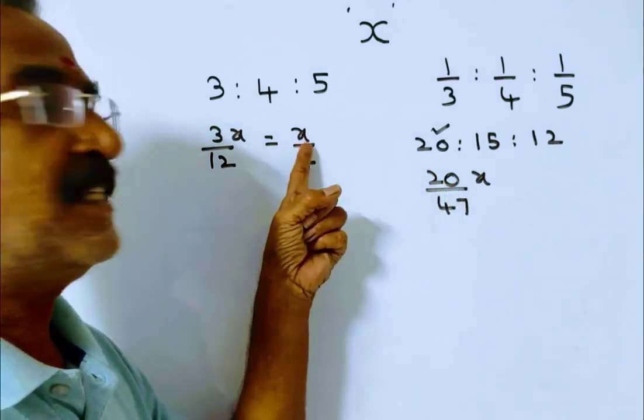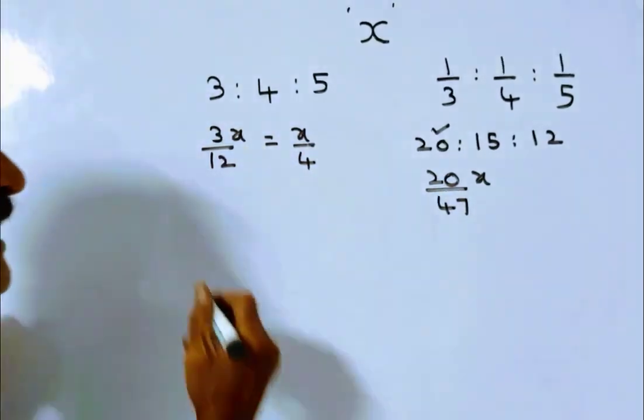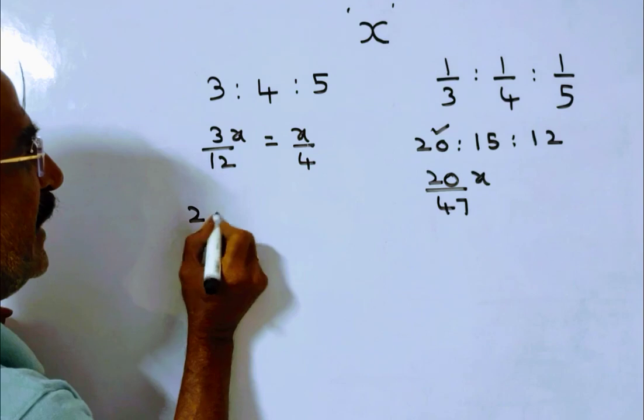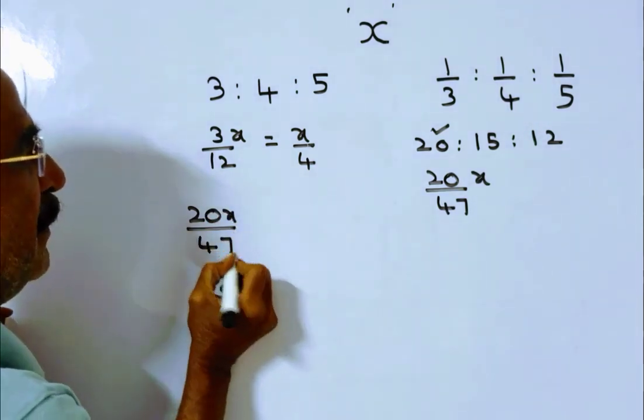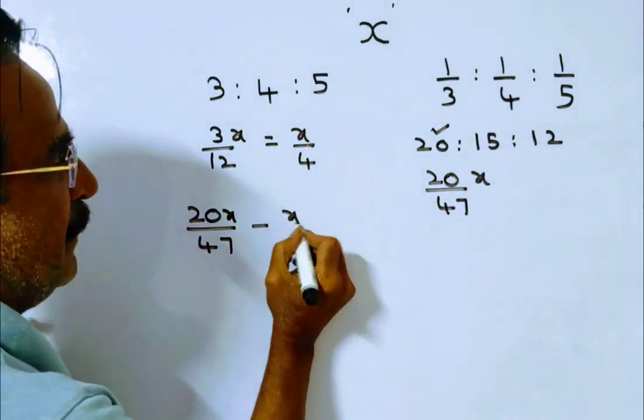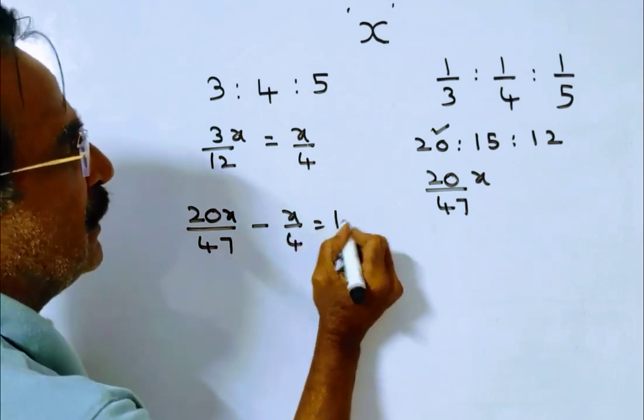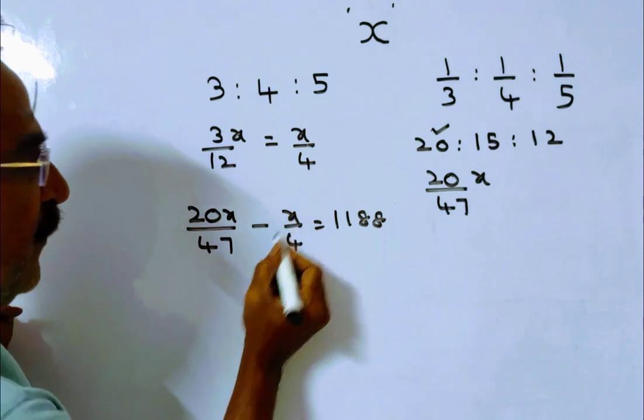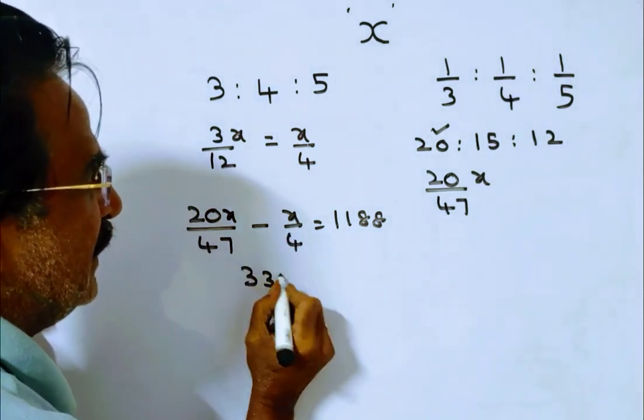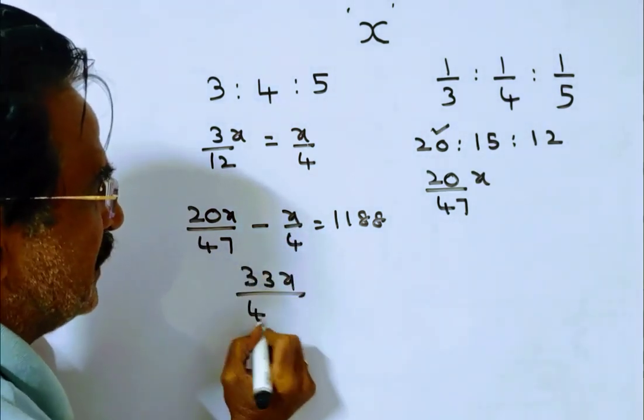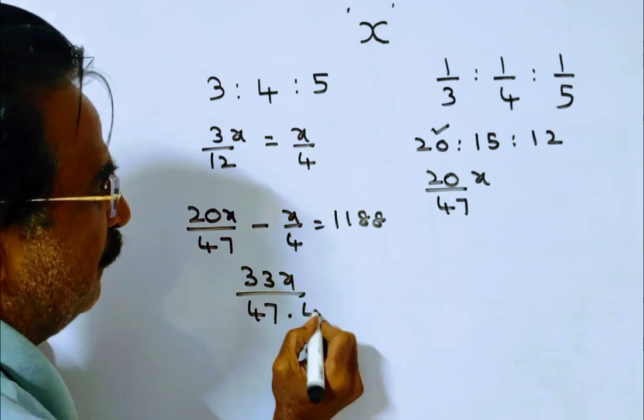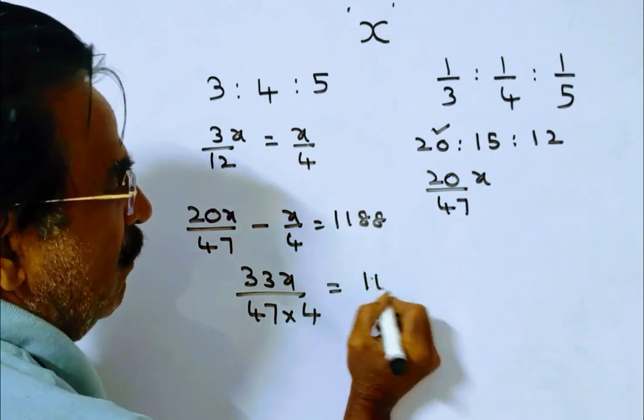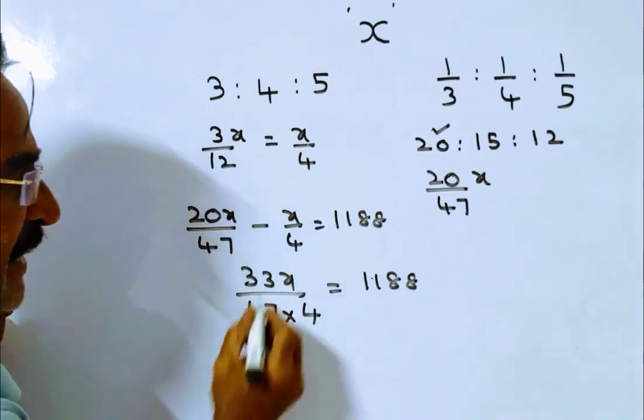So now this minus this is equal to 1,188. Friends, 20x by 47 minus x by 4 is equal to 1,188. 4 times 20 is 80 minus 47, 33x by 47 into 4. 47 into 4 is 188 equals 1,188.